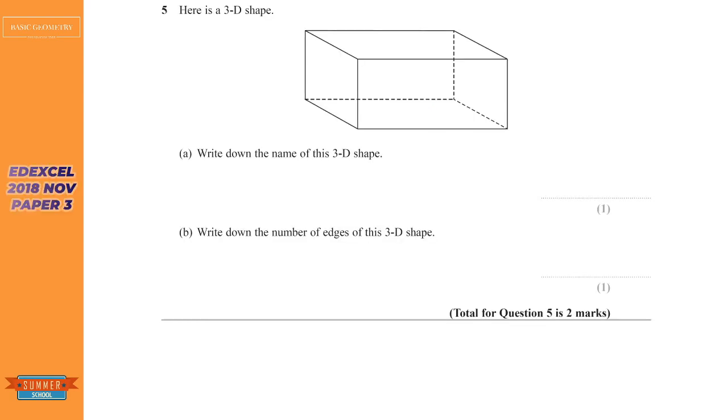Moving next onto Edexcel's offering for this topic and we've got a nice looking shape there. It says what is the name of this 3D shape. Now I'd be tempted to say cube if the sides look the same length, but this looks longer so I'm not going to risk saying it's a cube. I'm going to say it's a cuboid, which is like a three-dimensional rectangle. Cube is a three-dimensional square.